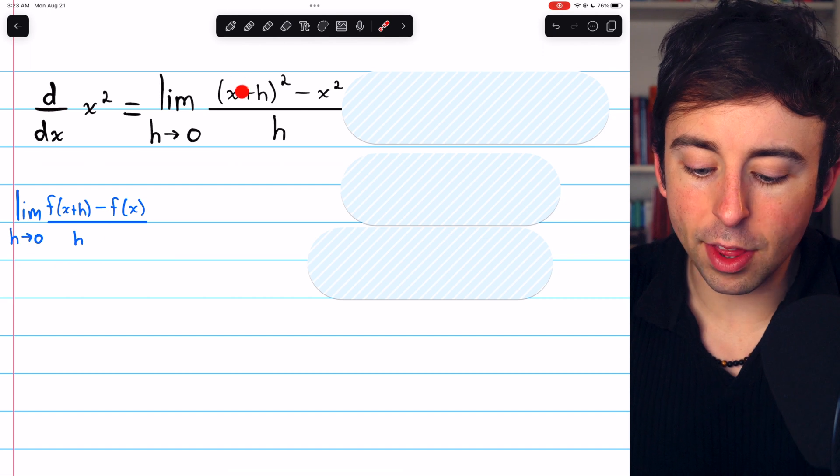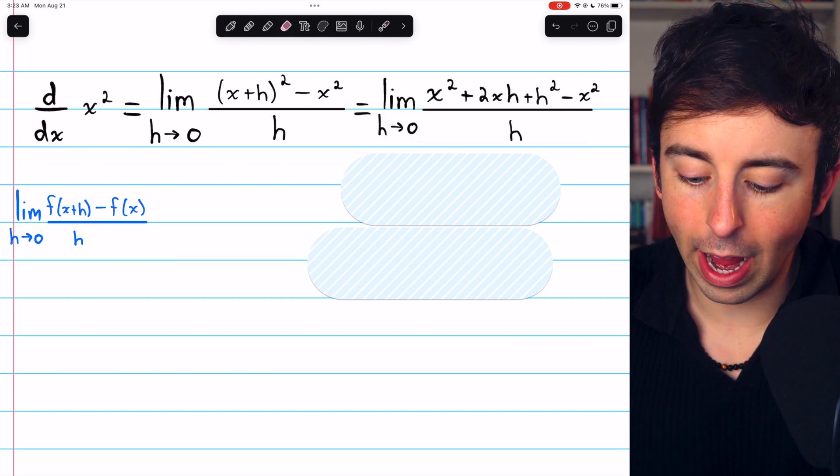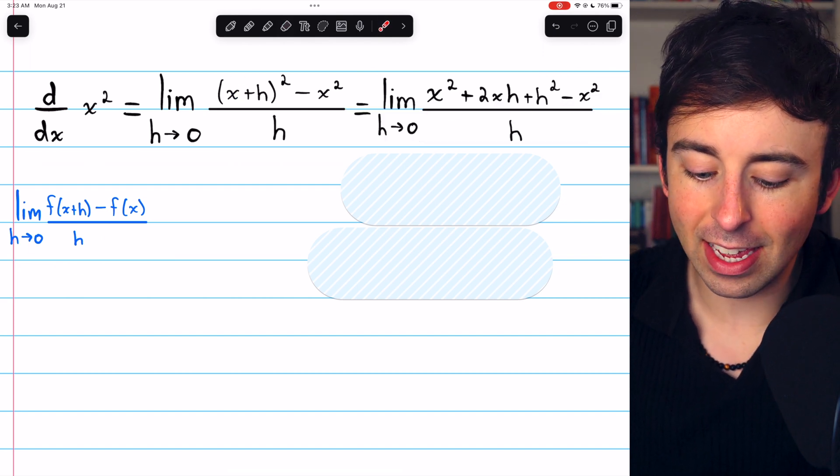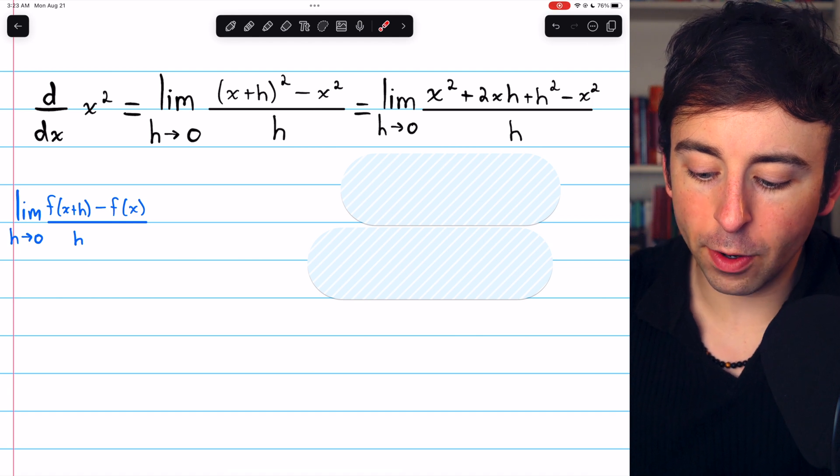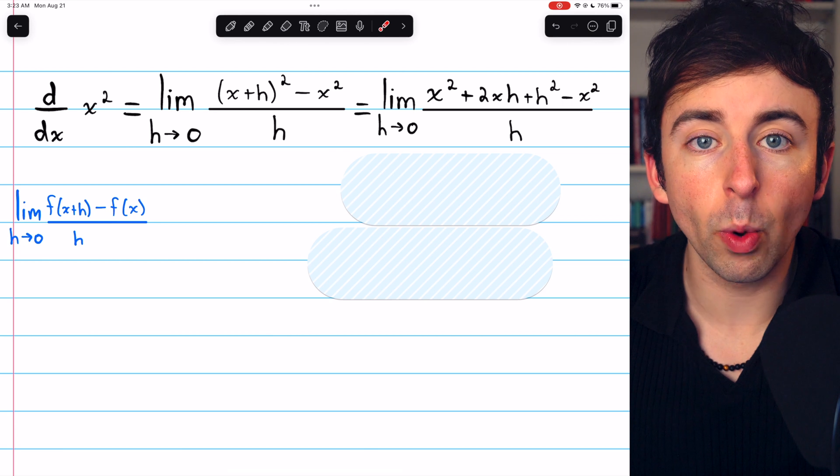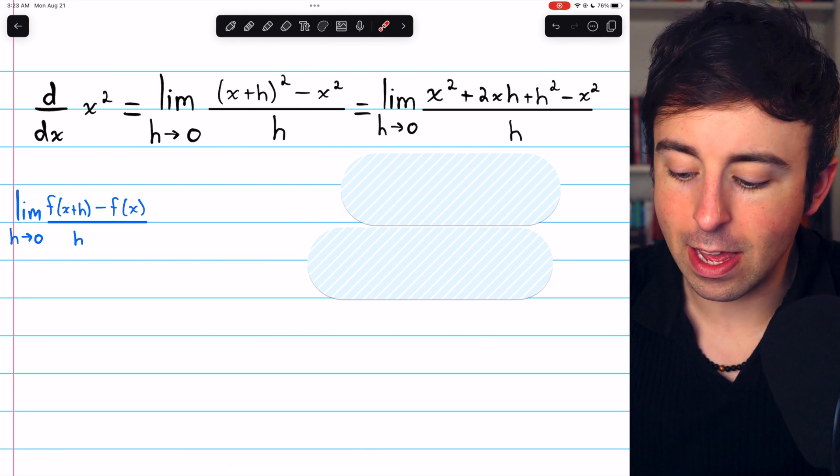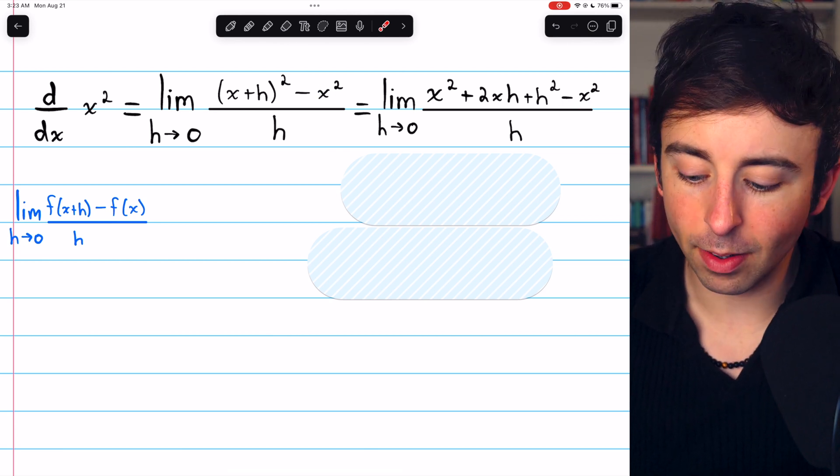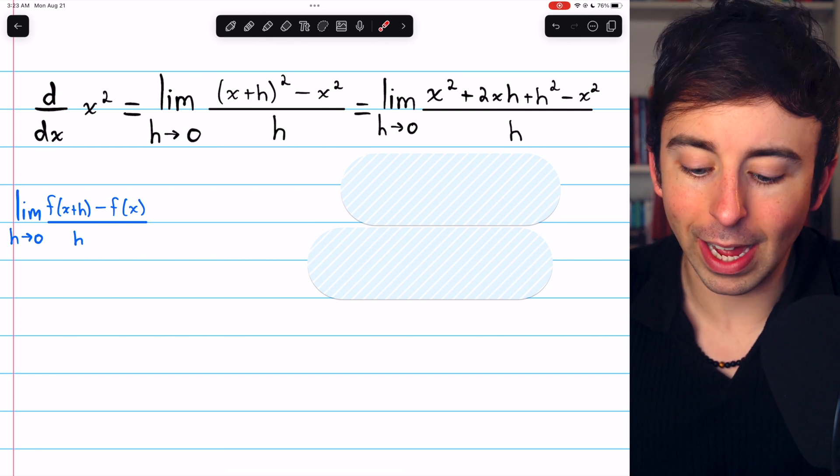Next, we will expand the x plus h squared, and that gets us here. x plus h squared is x squared plus 2xh plus h squared. And then we still have the minus x squared at the end, and it's all getting divided by h.